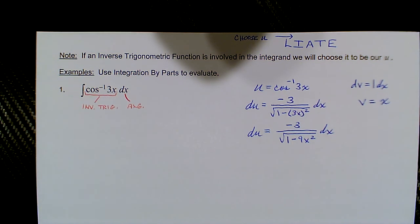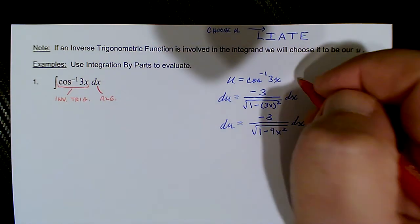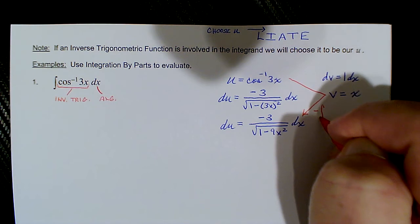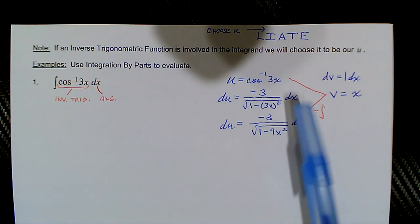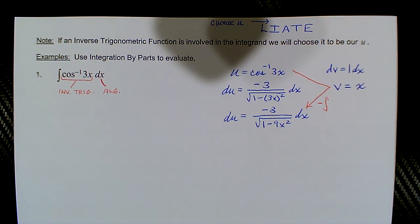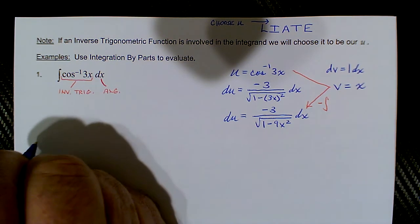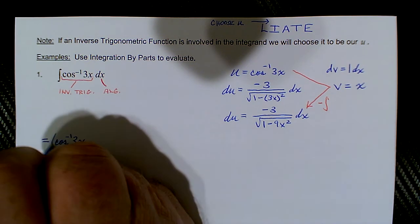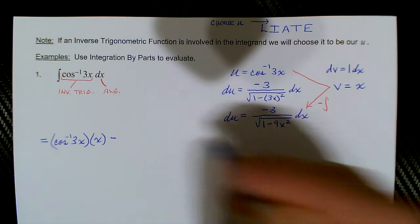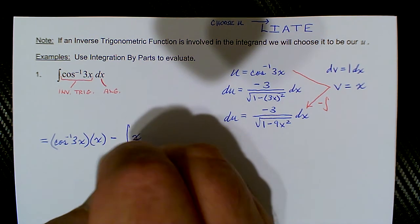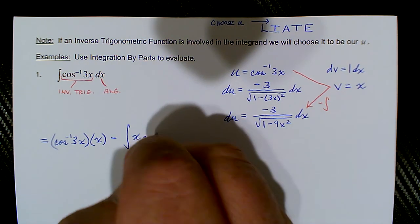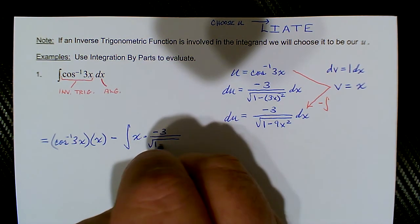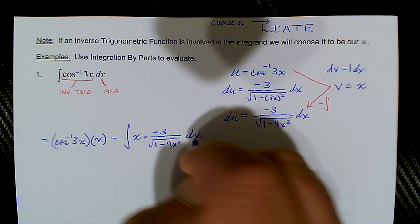Now we apply the integration by parts formula: the product of the diagonal, u times v, minus the integral of the product of the horizontal — v times du. That gives us: inverse cosine of 3x times x, minus the integral of x times (−3 over the square root of 1 minus 9x²), all with respect to x.